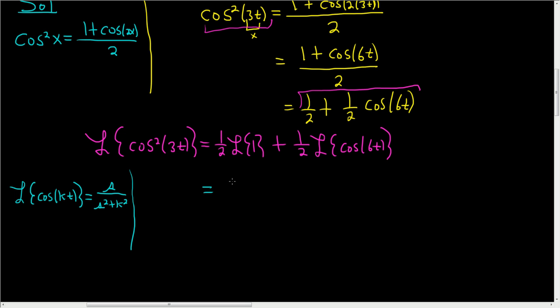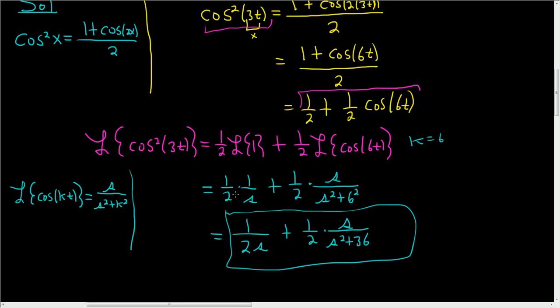The Laplace transform of 1 is just 1 over s. And then here we get 1 half again, and our k here is 6. So it's going to be s over s squared plus k squared. And k is 6, so 6 squared. So this is 1 over 2s plus 1 half times s over s squared plus 36. And that's it. That's the final answer. I hope that made sense.